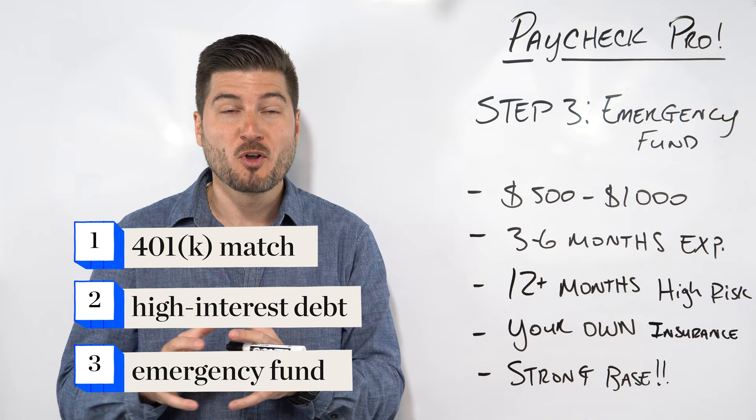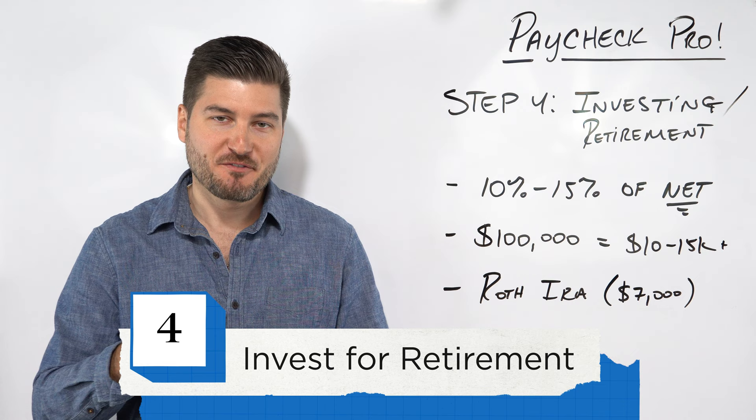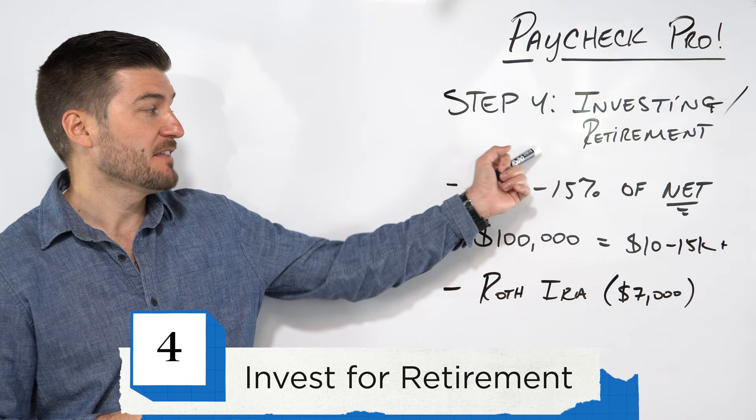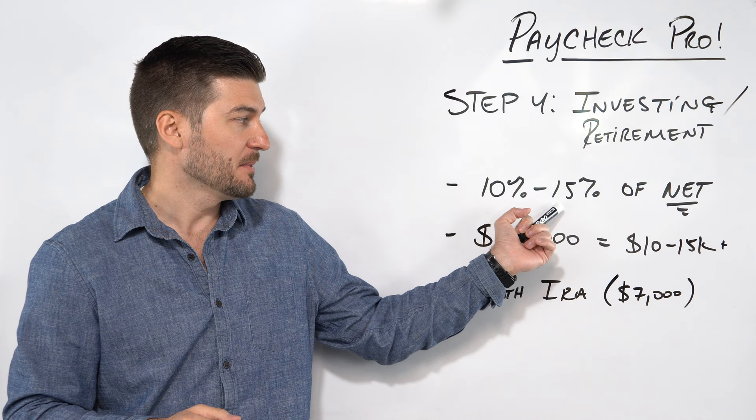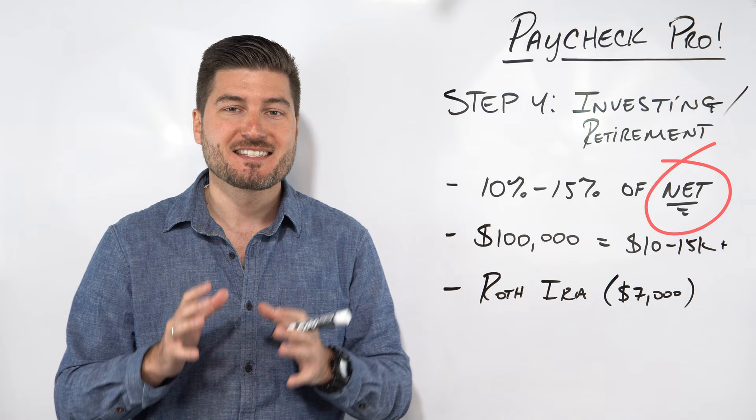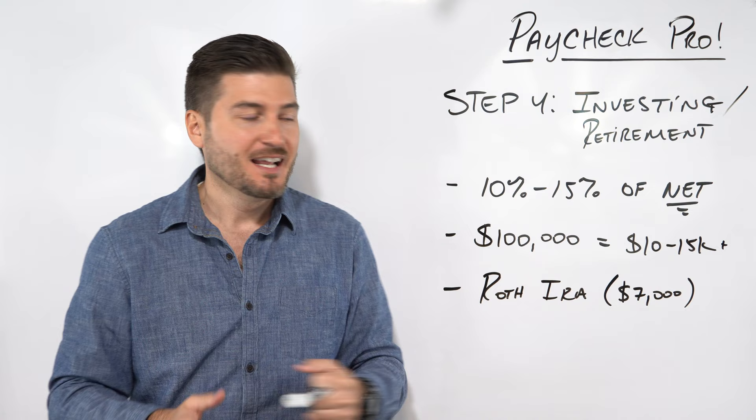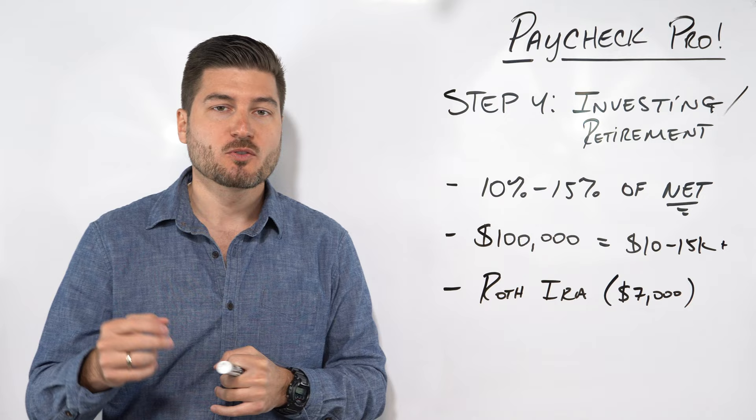Step four is investing for retirement. Yes, we touched on investing in your 401k up to your employer's match in step number one, but this is where we're going to take your retirement savings to the next level. You should responsibly be putting away 10 to 15% of your net income into retirement. That's why I have net highlighted right here. Notice how I said net, I don't like working off gross numbers, because it's not a realistic scenario after taxes. So for easy numbers, if you net $100,000 in a year, at least 10,000 of this 10 to 15,000 of this should be going towards retirement.